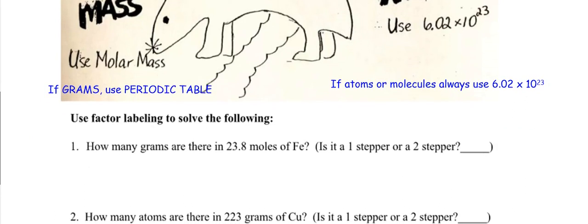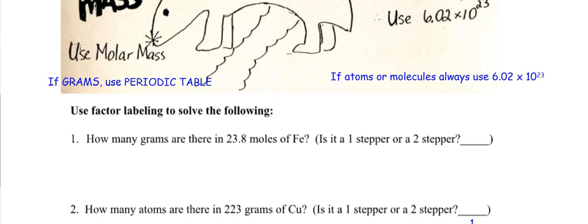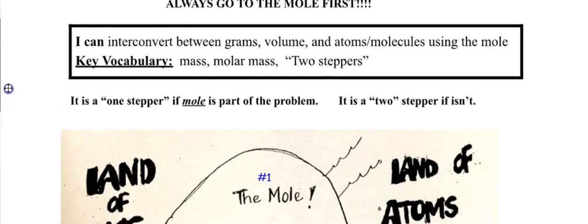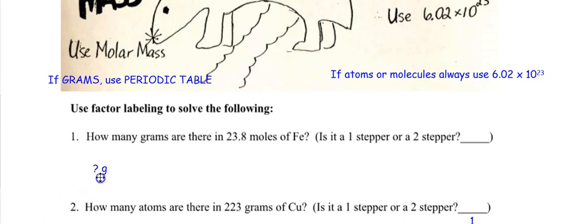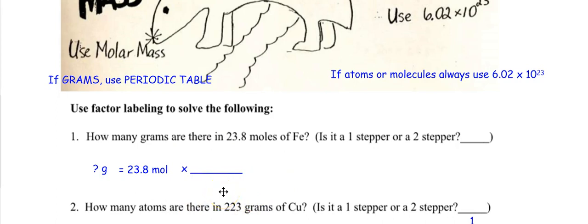Let's look at number one: how many grams are there in 23.8 moles of iron? Is this a one-stepper or a two-stepper? I've got grams here and moles here. Do you see the word mole in the problem? Yes. If the answer is yes, it is a one-stepper. So how many grams are equal to 23.8 moles? This makes it a one-stepper — you only need one ratio, one conversion factor.